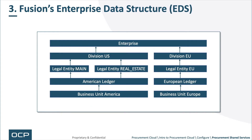Three, Fusion's Enterprise Data Structure. Within Fusion, business units cross ledgers into legal entities rolled up in divisions and in enterprise. The American business unit goes into something called the American ledger. There are two legal entities — one main, one real estate — and they roll into a division, which rolls into an enterprise.